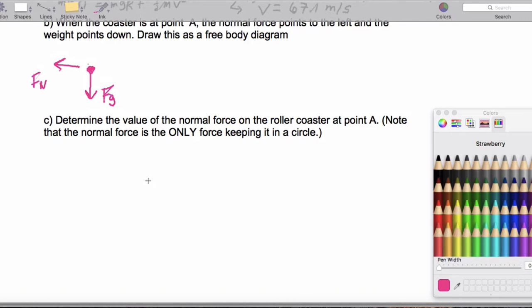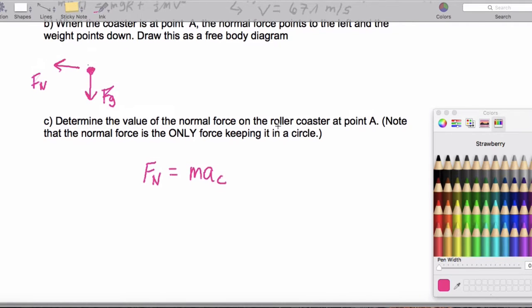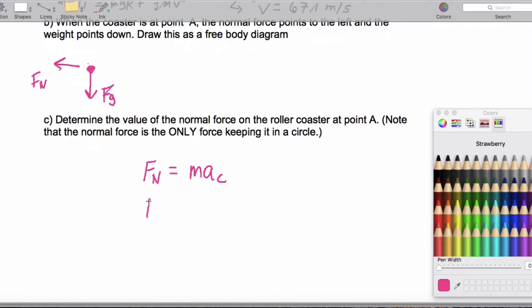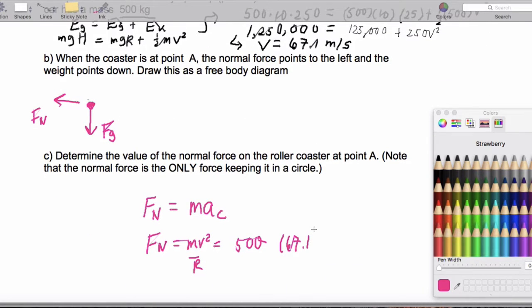So we can just plug in FN equals M V squared divided by R. So that's going to be 500 times V squared, which is going to be 67.1 squared divided by our radius, which is 25.